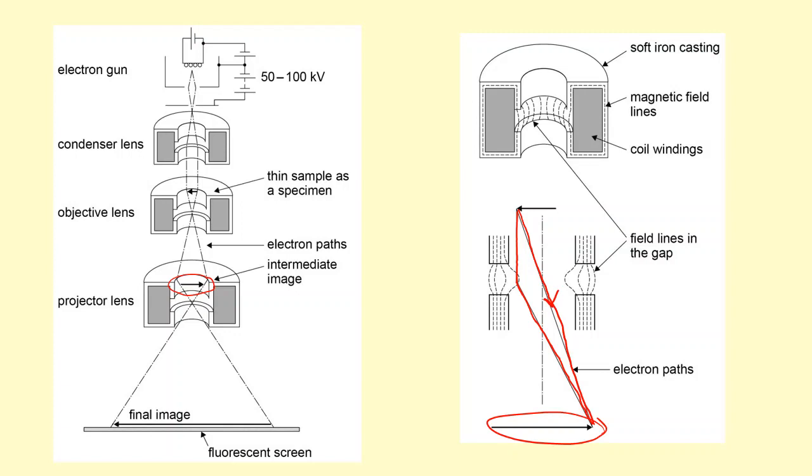After the projector lens, the projector lens will actually do the same job but it will magnify it further, forming a really large image and bring it to focus on this fluorescent screen where the final image is produced.